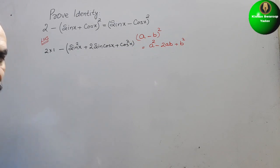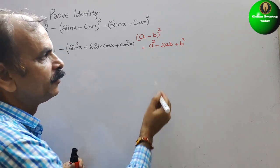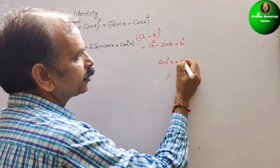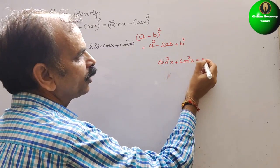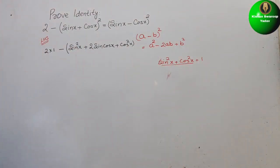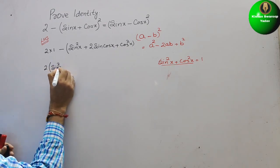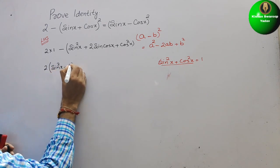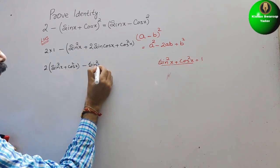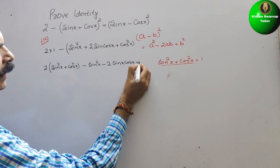Now open the bracket. At the same time, we know the identity that sin square x plus cos square x is equal to 1. So this value we substitute in place of 1. It will be: 2 in bracket, sin square x plus cos square x, and then open this bracket, we get minus sin square x minus 2 sin x cos x minus cos square x.